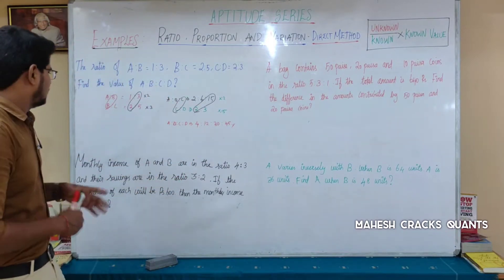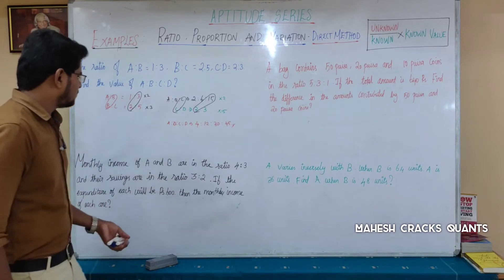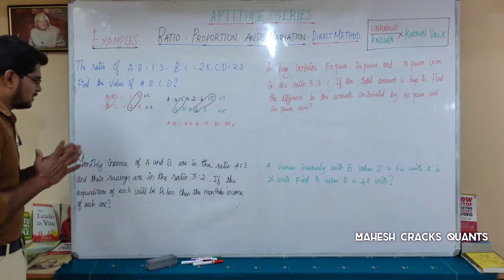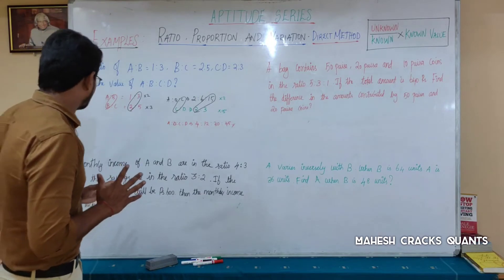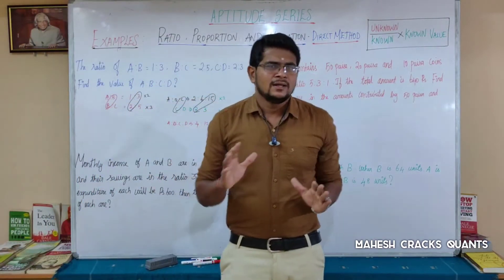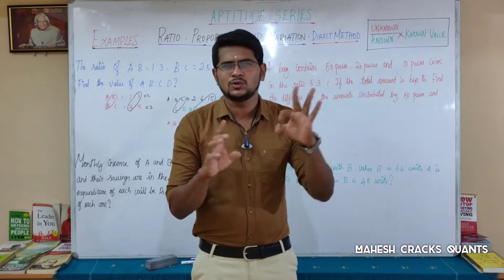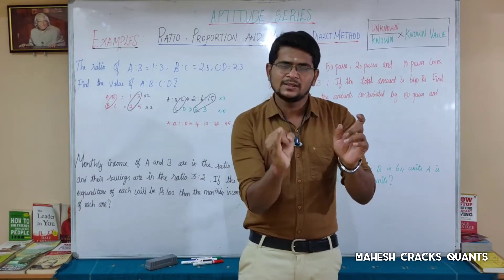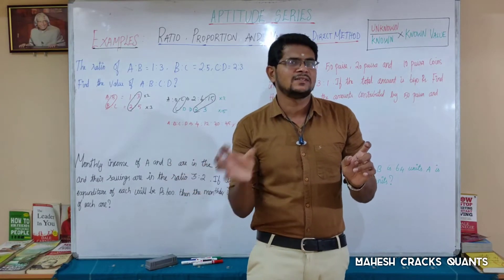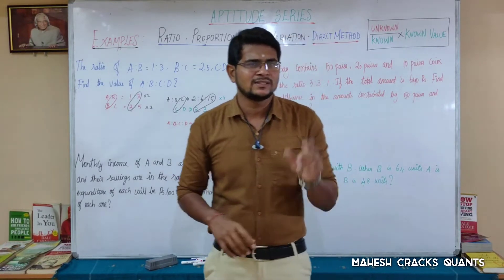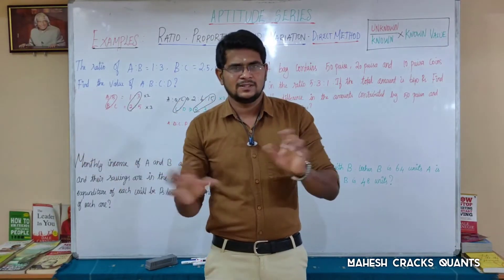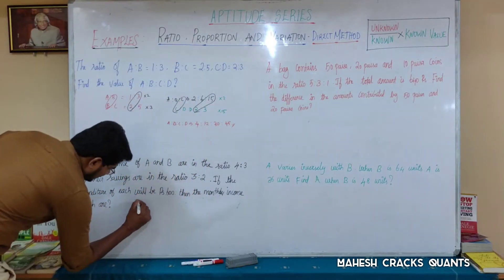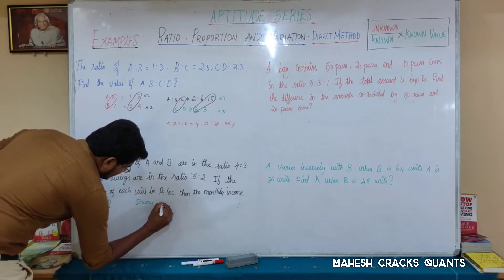Second problem: two persons' incomes are in the ratio of 4 to 3 and their savings are in the ratio of 3 to 2. If the expenditure of each is 600 rupees, find the monthly income of each one. We know that income equals expenditure plus savings, so savings equals income minus expenditure.